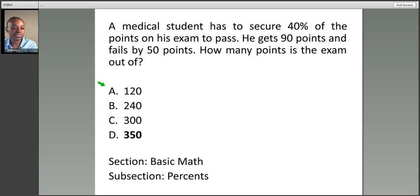A medical student has to secure 40% of the points on his exam to pass. He gets 90 points but fails by 50 points. How many points is the exam out of?